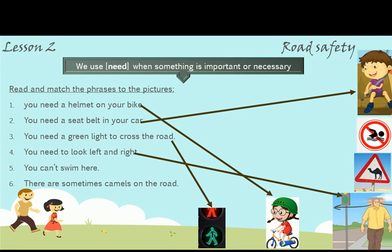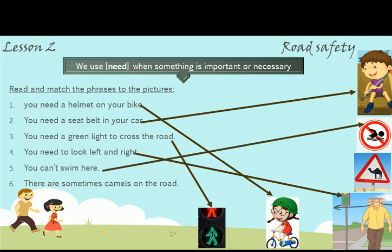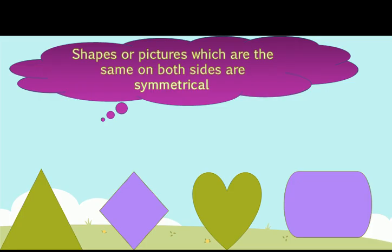Number 5: You can't swim here. Number 6: There are sometimes camels on the road. We use 'need' with the necessary and essential things that we need.